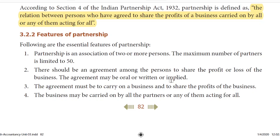Third, the agreement must be to carry on a business and to share the profit of the business. The business may be carried on by all the partners or any of them acting for all. All partners are actively participating. If you want to represent all partners, any of them may represent all partners. So, these are the features of partnership firm.